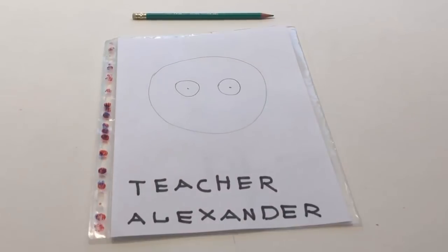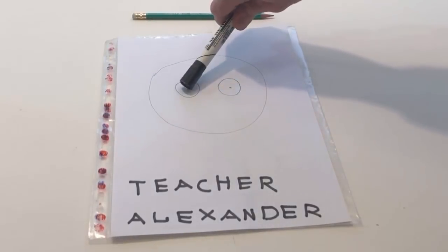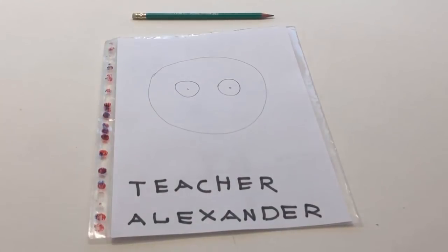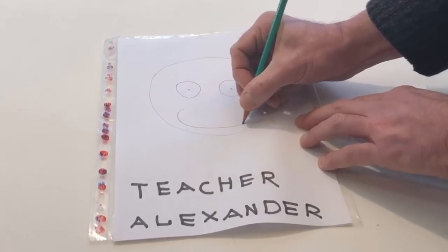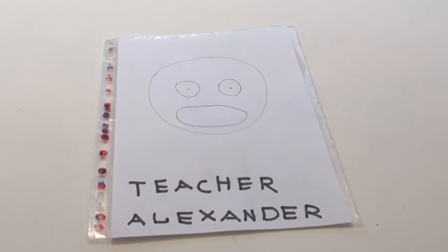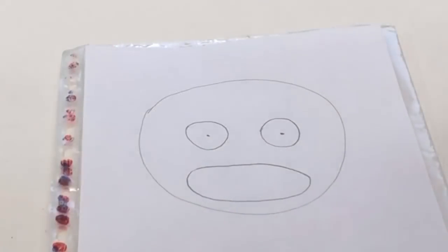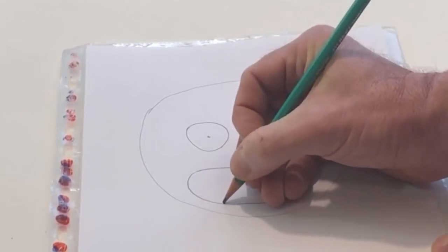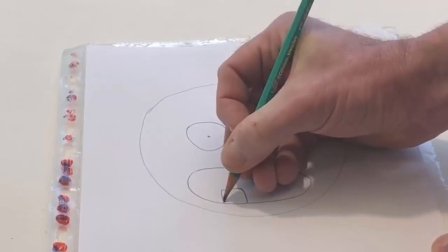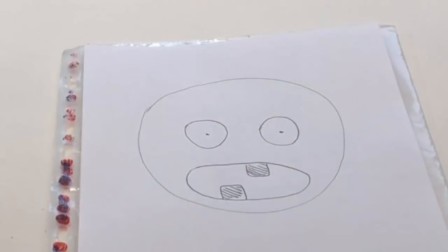With the pen touch my eyes. Take the pencil and draw my mouth. Draw two teeth inside my mouth. One at the top and one at the bottom. Brush my teeth with the toothbrush.